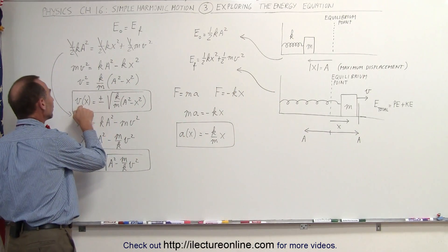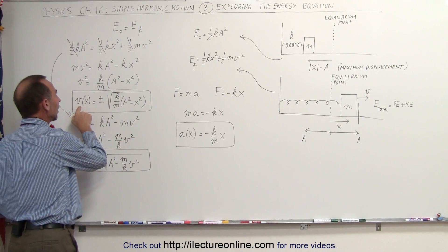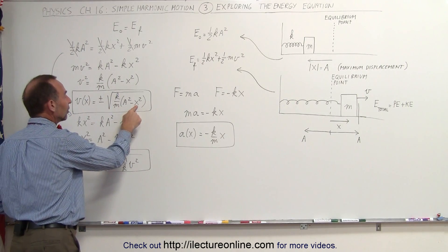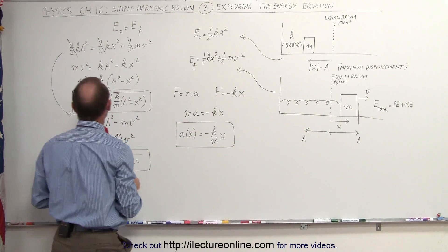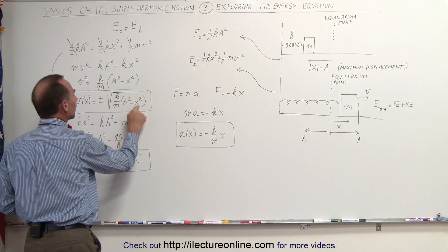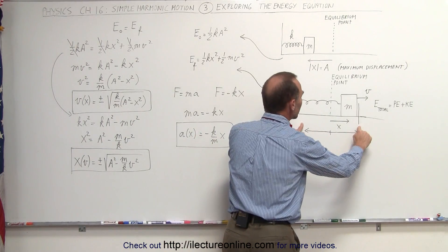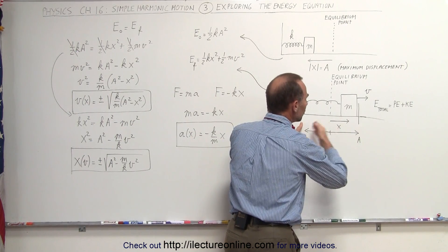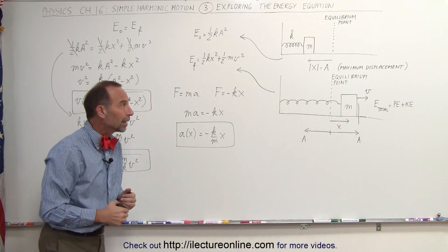And again, looking at velocity — notice we have maximum velocity when x is equal to zero. When x is equal to zero it's at the equilibrium point. It has zero velocity when x equals A, which means it's at the far ends of the range of motion at plus or minus A.